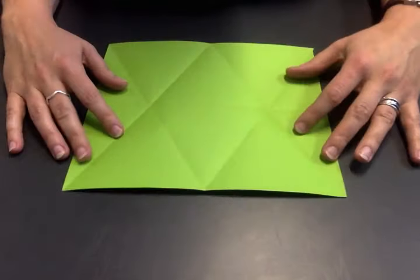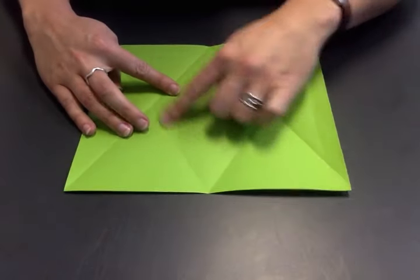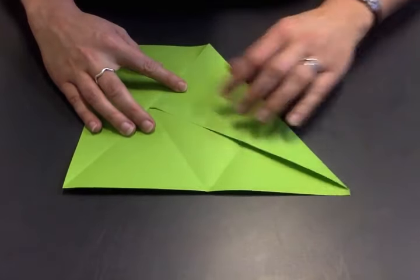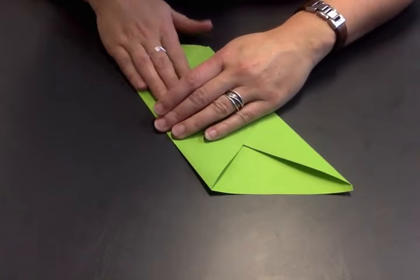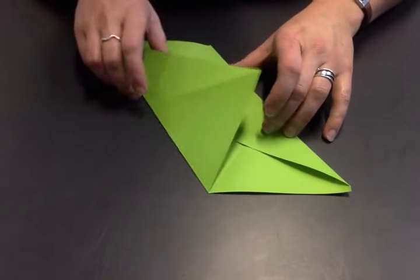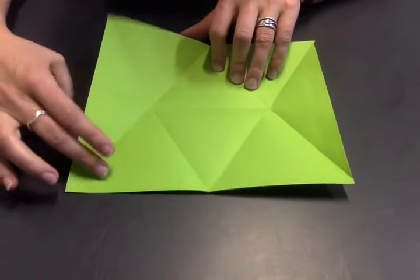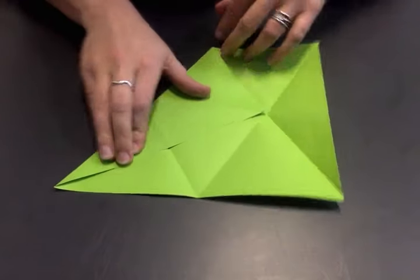Now you have all of the folds you need. You get two pieces like this, and on one of them you fold one pair of opposite corners towards each other along the existing fold lines, and on the other you fold the other two corners towards each other along the existing fold lines.